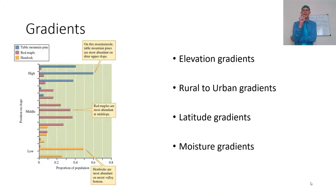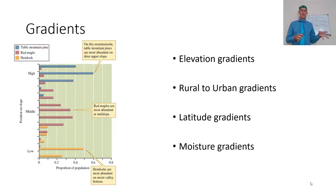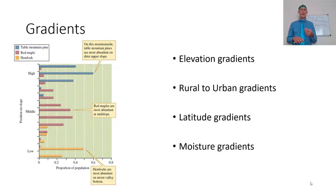We're also going to look at gradients — from one physiological constraint to the other, really: too cold to too hot, too low to too high. A lot of research is done along elevation gradients. As we drive up a mountain, you see the change in what is living along that mountain. On an eastern mountainside, eastern hemlock is very abundant on moist valley bottoms, red maples are mid-slope trees, and then as you get up higher you get table mountain pines — restricted by physiology from lower elevations, while hemlocks are restricted from higher elevations.